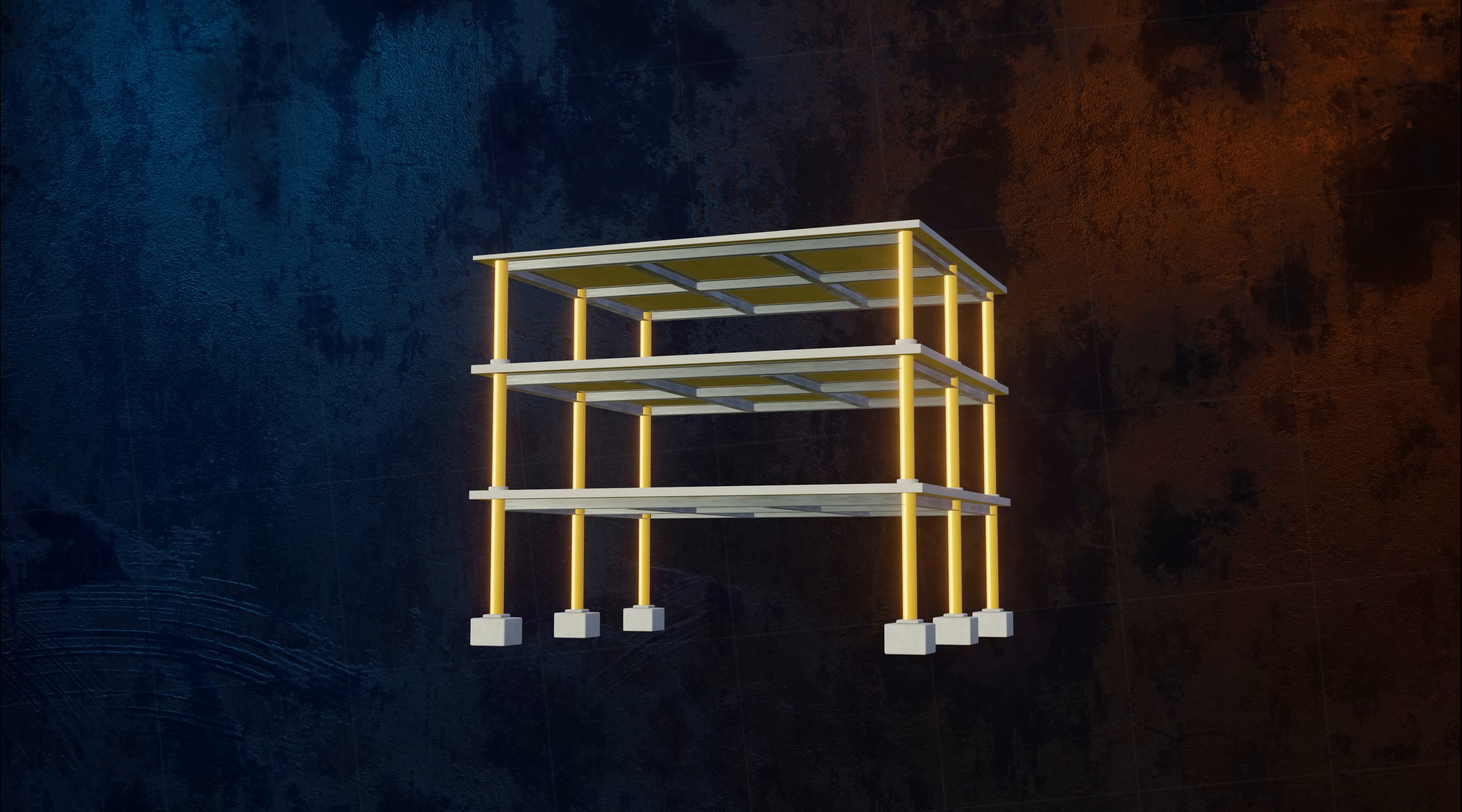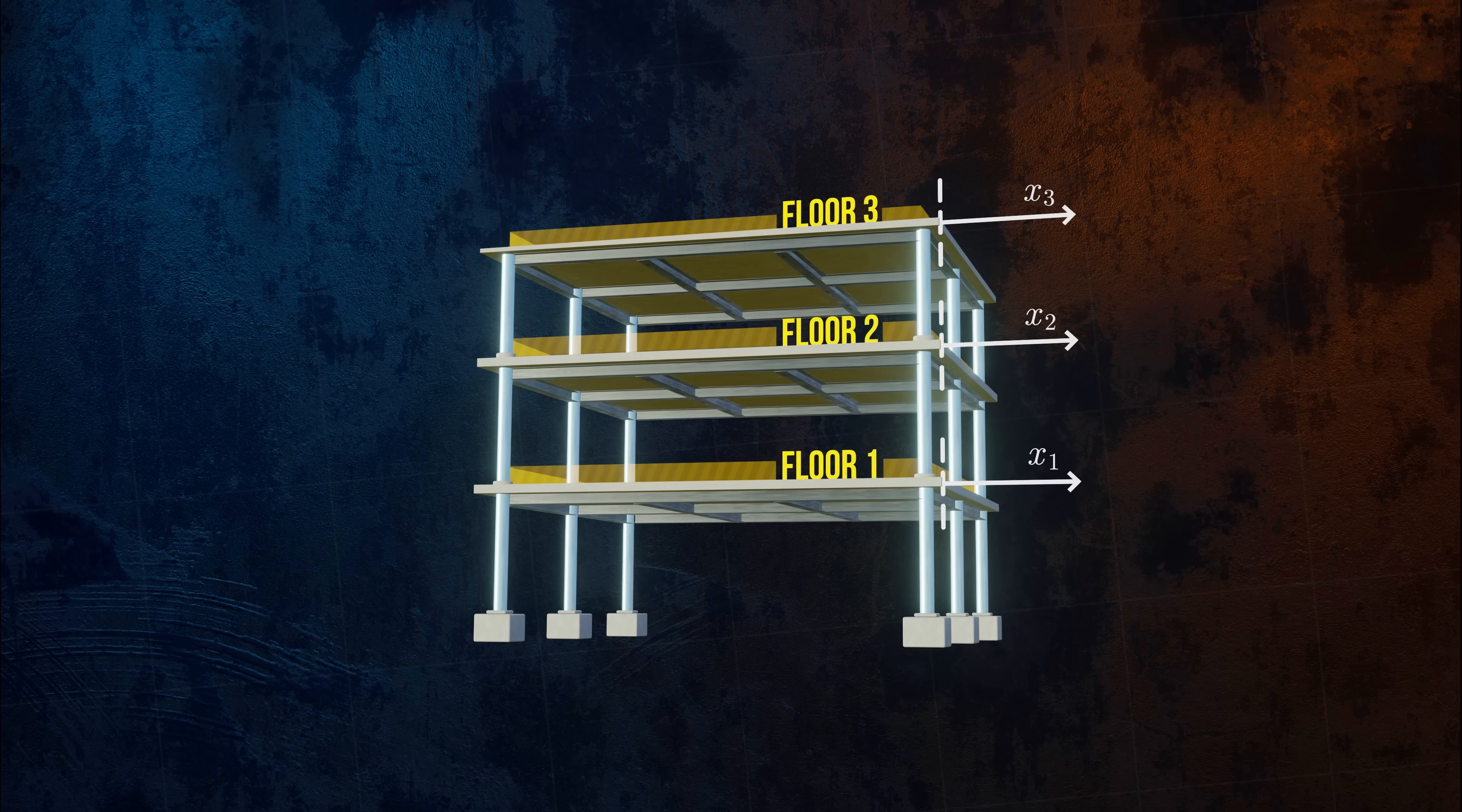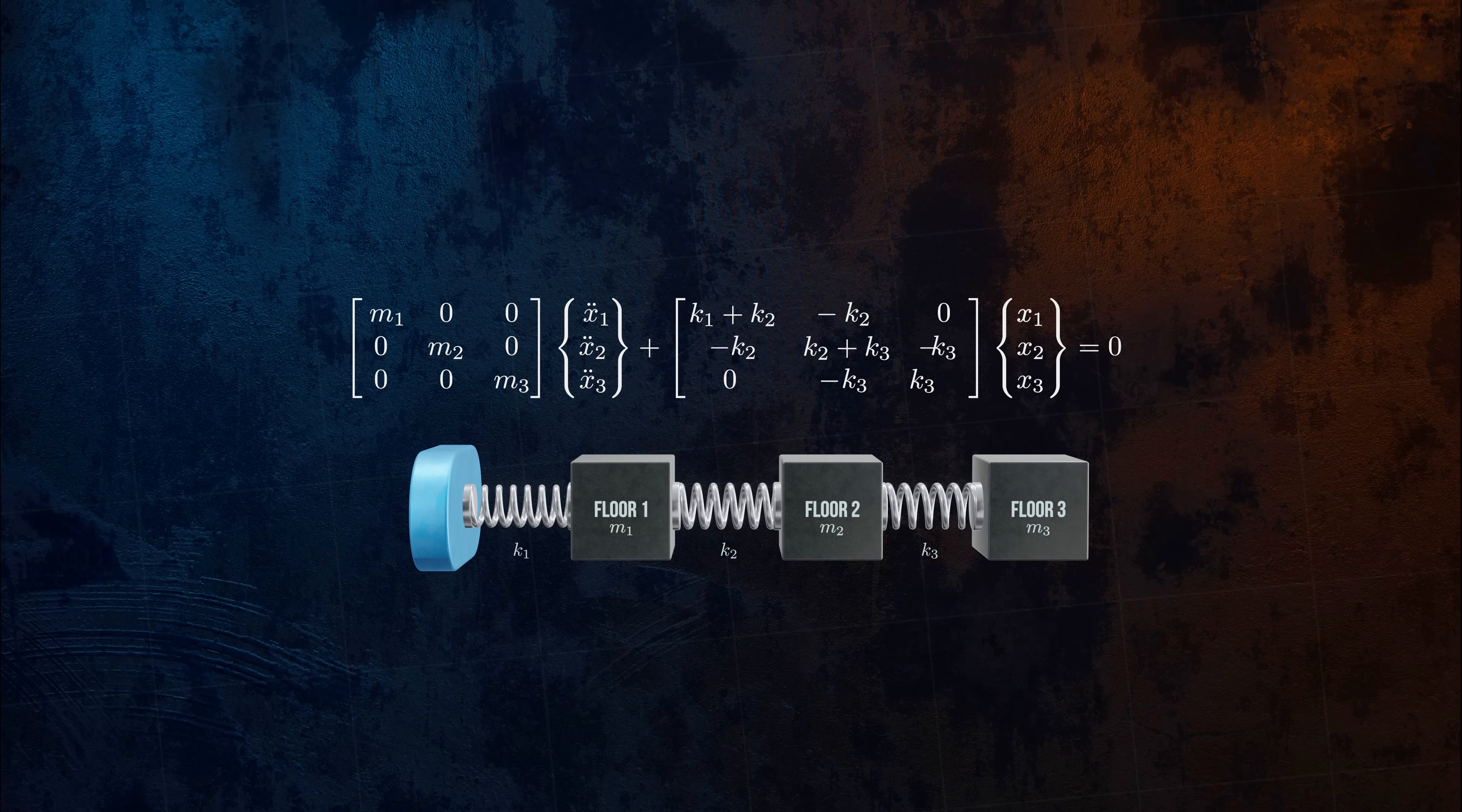If we assume that the columns between the floors are axially rigid but can bend laterally, we can model it as a system with three degrees of freedom, the x-coordinate of each floor. Each of the masses in the model has its own equation of motion. And if we rewrite this system of equations in matrix form, we can see it has the same familiar form as the equation of motion for an undamped single degree of freedom system.